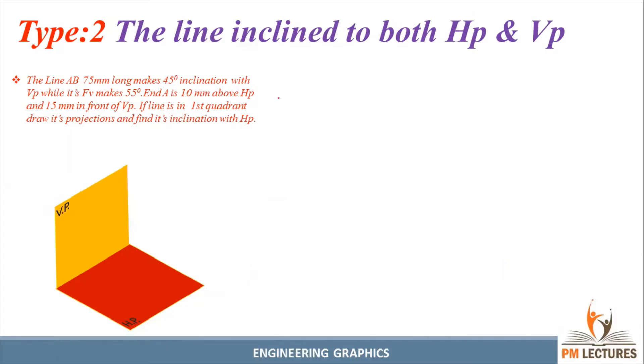Hey guys, welcome to PM Lectures. This is Raj Kamal. A line AB, 75mm long, makes 45° inclination with VP while its front view makes 55°.